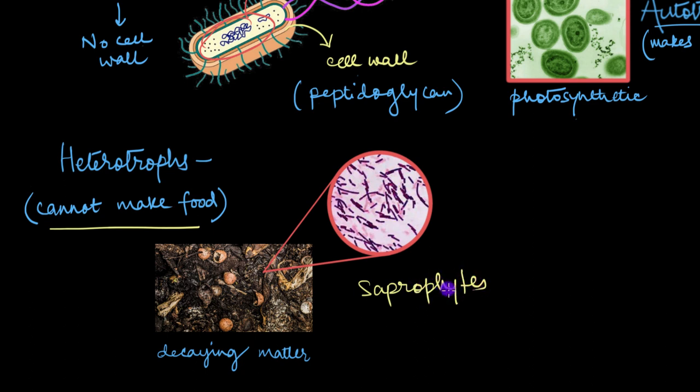So these decomposers, they are basically a part of the cleanup crew of the earth. So they're basically cleaning up all the garbage that is lying around. And an example of such a saprophytic bacteria is this bacteria, the picture that I have right over here. This is Bacillus subtilis. So this is a saprophytic bacteria.